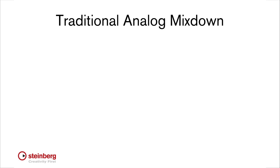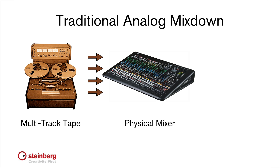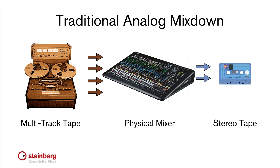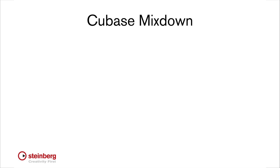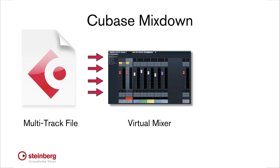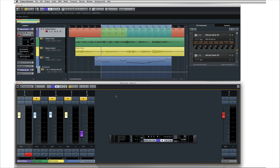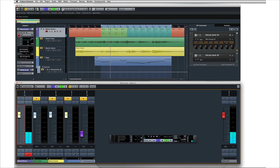In an analog studio, the engineer mixed a song by playing a multitrack tape recorder through a physical mixing desk and then recording that onto a two-track tape recorder, and this was all done in real time. In Cubase, the mixdown process consists of exporting a multitrack file through a virtual mixing desk into a two-track file.